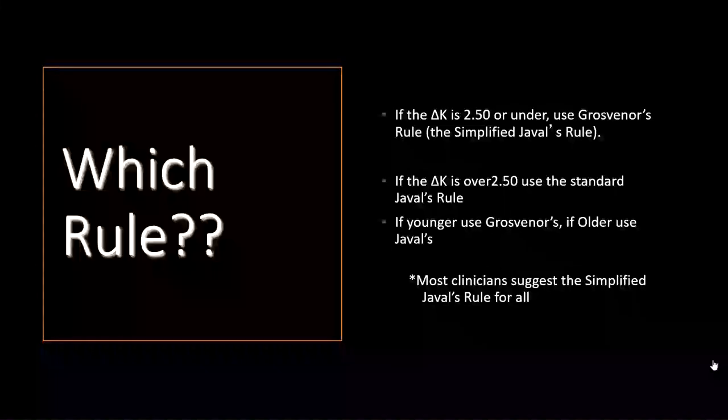Some people might ask which rule to use. For the purposes of this class, you will only need to use simplified Javal's rule. However, some general rules of thumb, if you were going to apply this in clinic, is if the difference in the corneal astigmatism is two and a half diopters or under, you should use the simplified rule. If it's over two and a half diopters, you should use the standard rule.